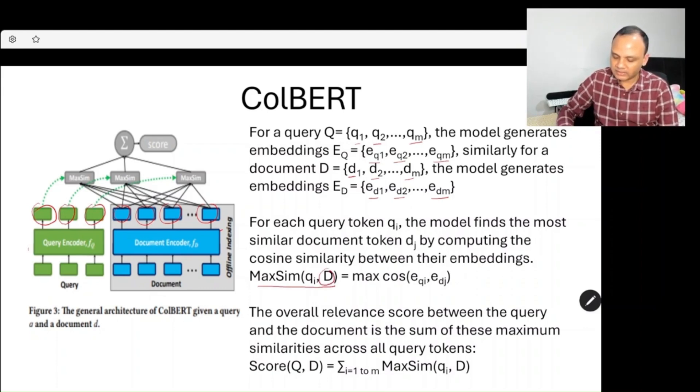D means the entire document, and qi means an individual token. This is defined by the maximum of cosine similarity between eqi and edj—eqi is the query embedding and edj is the document embedding.